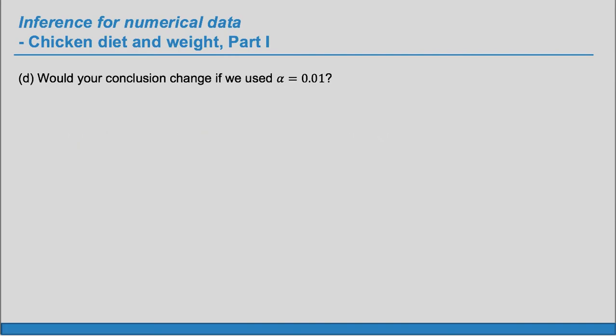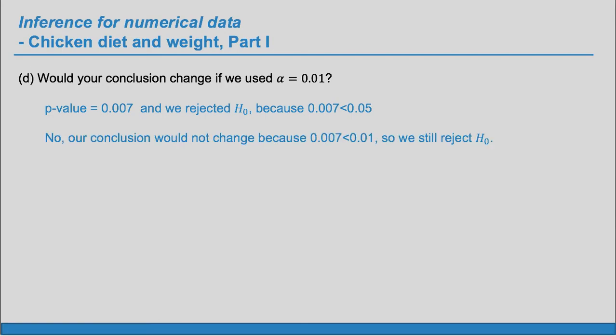D, would your conclusion change if we used alpha equals .01? What was our conclusion? Our conclusion was reject H sub O because our p-value was less than the alpha of .05. Here, we can say no, our conclusion would not change because our p-value is still less than .01. So, we still reject H sub O.